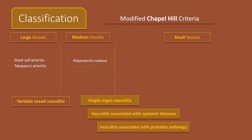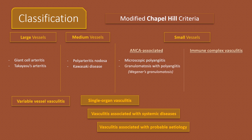Medium vessel vasculitis include Polyarteritis nodosa and Kawasaki disease. Small vessel vasculitis are subcategorized into ANCA-associated vasculitis and immune complex-associated vasculitis. ANCA-associated small vessel vasculitis are Microscopic Polyangiitis, Granulomatosis with Polyangiitis (previously known as Wegener's Granulomatosis), and Eosinophilic Granulomatosis with Polyangiitis, also known as Churg-Strauss syndrome.